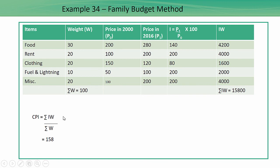I'll get IW which is equal to 15800. Weights are 100 so it would come to 158. That is my CPI. So this is how CPI is calculated using family budget method.